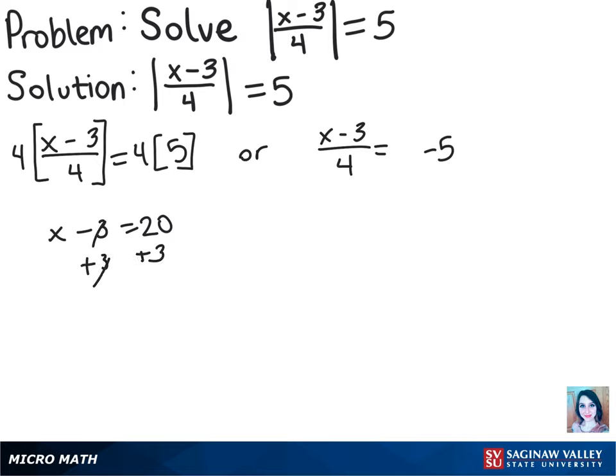Looking at the other one now, we can do the same thing and multiply both sides by 4 again. And that will give us x minus 3 equals negative 20. And then we can add the 3 to both sides.